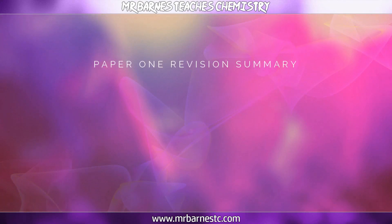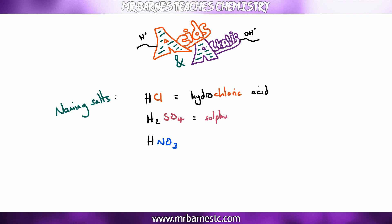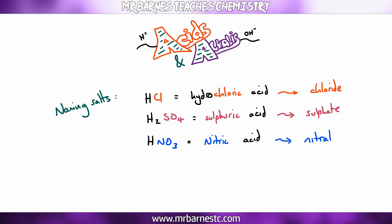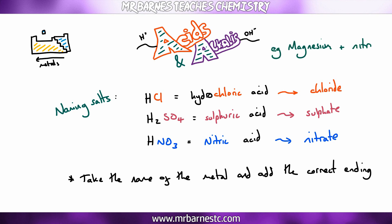The next section covers word equations involving acids. The three acids are HCl, H2SO4, and HNO3 — hydrochloric, sulfuric, and nitric acid. Hydrochloric acid always produces a chloride salt, sulfuric acid always produces a sulfate, and nitric acid always produces a nitrate. To name your salt, take the metal's name and add the correct salt ending — for example, magnesium with nitric acid gives magnesium nitrate.